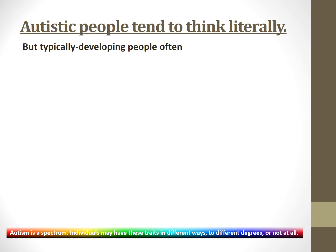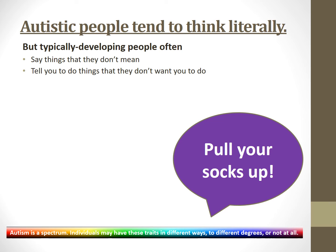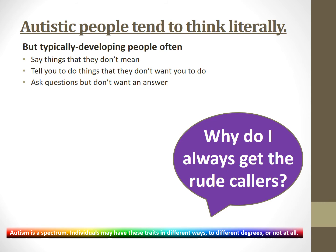Autistic people tend to think literally, but typically developing people often do quite strange things. They say things they don't mean — like 'I'm going to kill him' when they have no intention of killing him. They tell you to do things they don't want you to do, like 'pull your socks up'. They ask questions but don't want an answer — you might be in a call centre and a colleague says 'why do I always get the rude callers?' and if you answer statistically, they look at you as though you're weird.